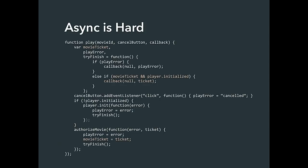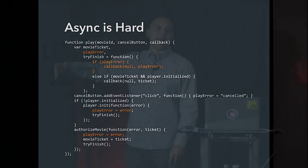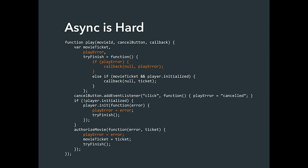What's so hard about asynchronous programming? I've highlighted variables we've introduced into the program to keep track of whether certain tasks are done — the movie ticket variable, the player loaded variable. We also have lots of code dedicated to dealing with errors, tracking whether we have an error, forwarding on that error — yet more state. And I actually left a bug: I attached a handler to the cancel button and forgot to unhook that handler. These are the types of issues you get into all the time in asynchronous programming.